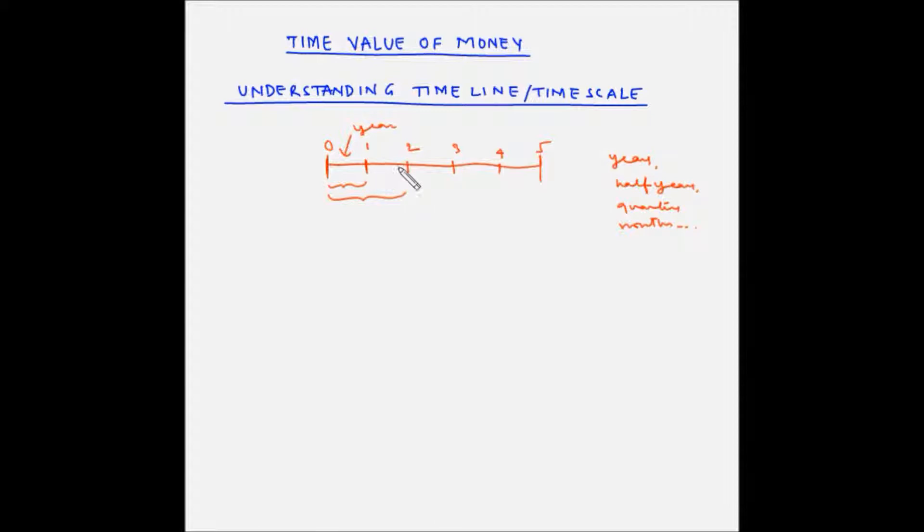So basically each tick mark represents the end of one period and beginning of the other. So this tick mark here represents the end of the first period and the beginning of the second period.